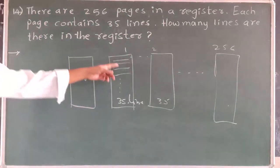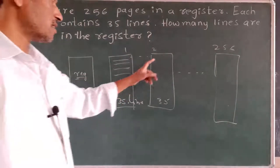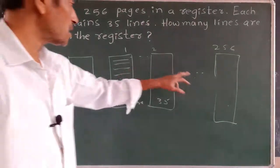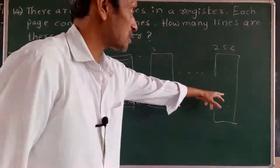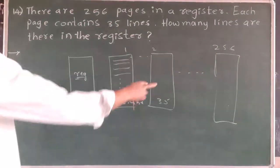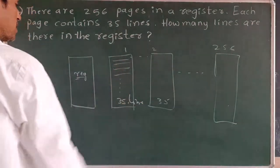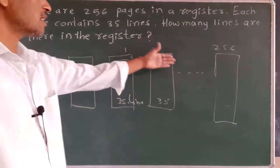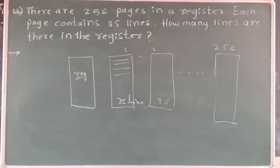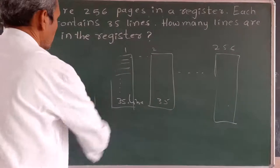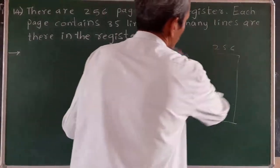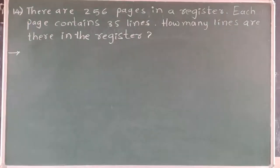So how many total lines are there? In one page there are 35 lines, and in the second page also 35. There are 256 pages in that register. So we multiply 35 by 256. We will get the total number of lines in all the pages. Number of lines in one page is 35, and the total number of pages is 256.